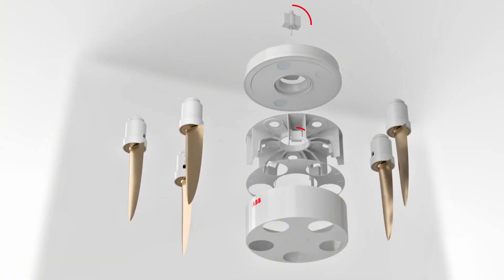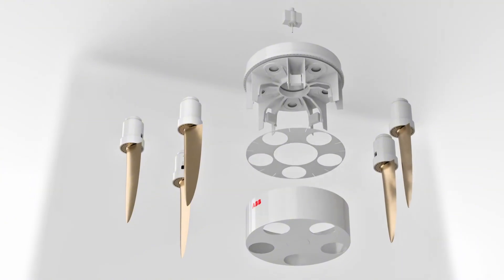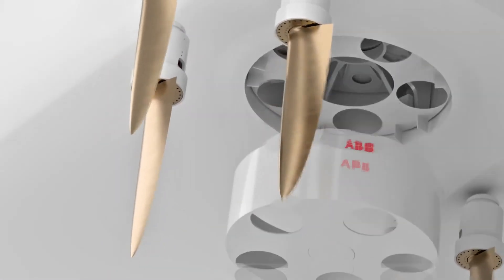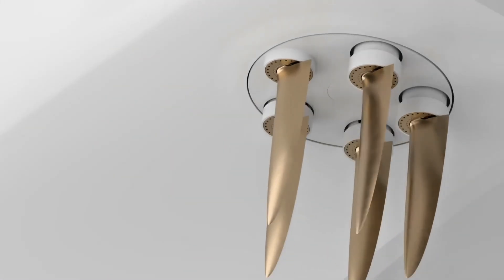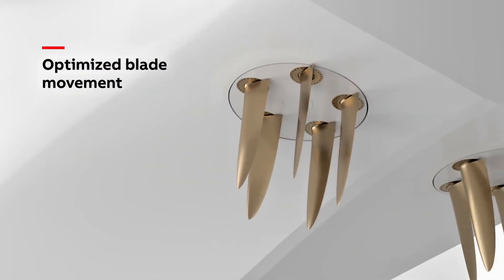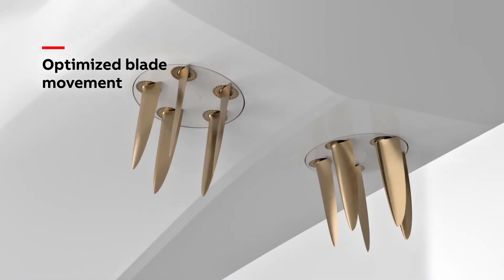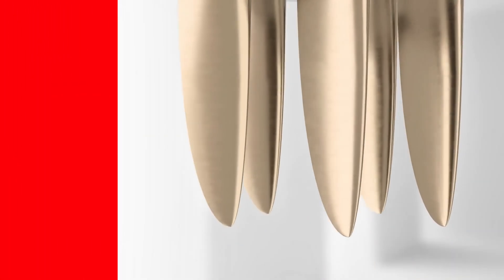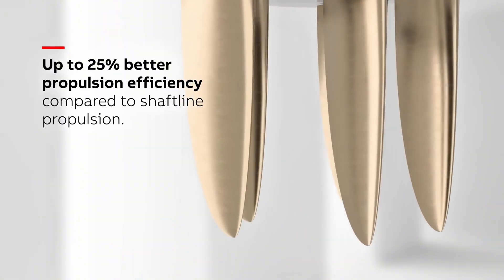In short, these thrusters have turned some boats into the ninjas of the water – extremely agile, precise, and a bit uncanny. If you see a big ship sliding sideways, or spinning in place without fuss, chances are a cycloidal prop is doing its magic underneath.